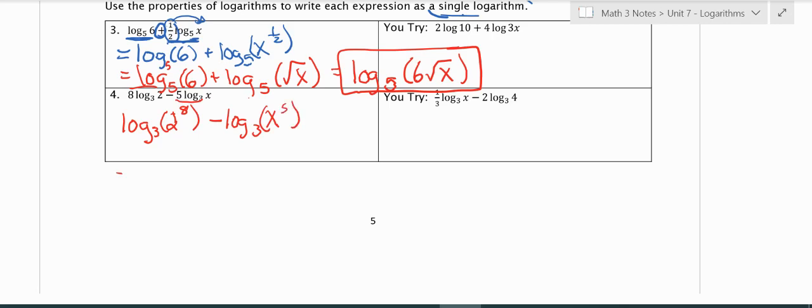Now that I'm rewriting it, I'm going to always go from left to right. This is subtraction, so I can rewrite it as division. So log base 3 of 2 to the 8th over x to the 5th. You can rewrite 2 to the 8th if you really want to - it'd be 128 - but you don't really have to. Sometimes the question might ask for it, but if it doesn't, it's really more to teacher preference.